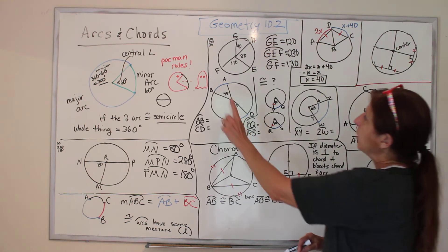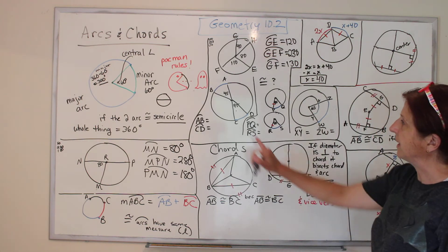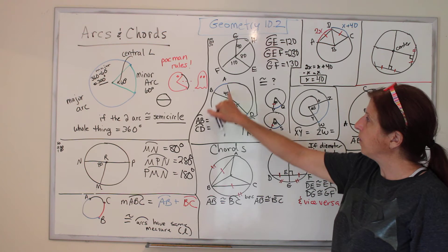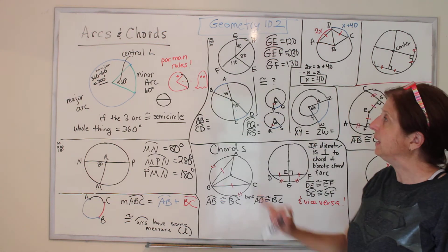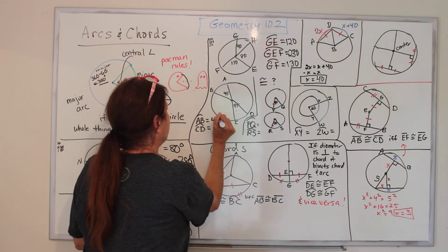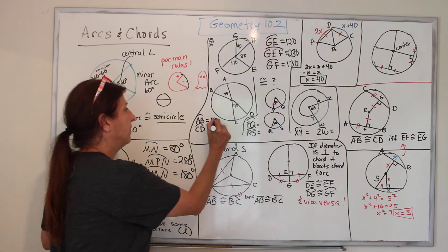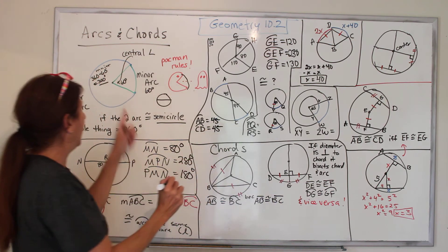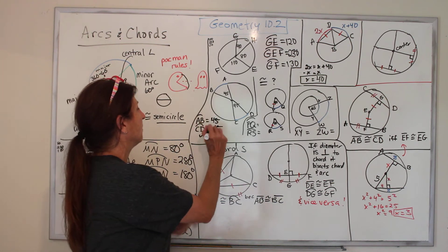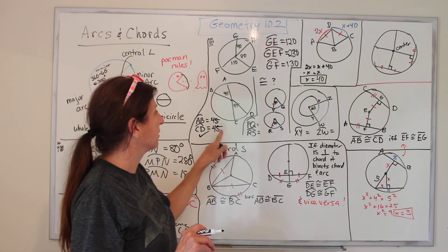How about this one? We're going to find out what the arcs are and say are they congruent. So here I have two that are 45 degree measure. What would arc AB be? The same as 45. It's 45. What would arc CD be? 45. The angle measure matches the arc measure. Are they congruent? Yes, they're on the same circle. So they have to have the same radius. They're the same. They're congruent.